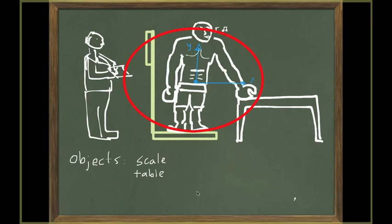Once you have identified the object of interest, move on to the third step, which is to make a list of the objects that are in direct contact with the object of interest. What objects are touching the boxer? From the sketch you can see that the scale underneath the boxer is touching him, and the table is also in contact with the boxer. So we have two objects that can apply force on the boxer: the scale and the table.